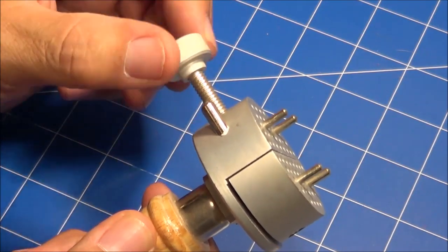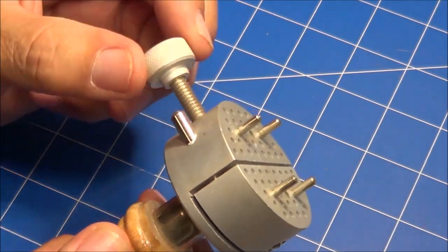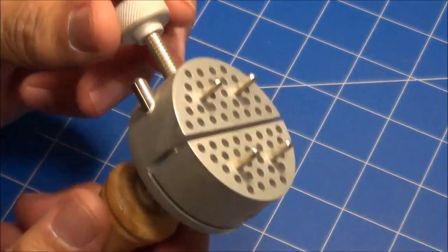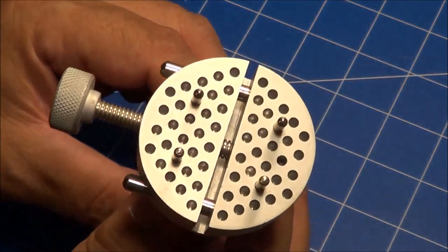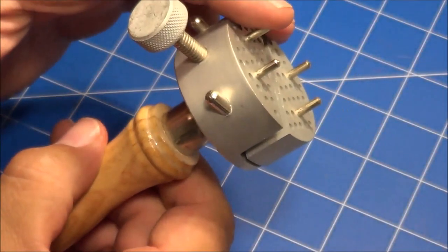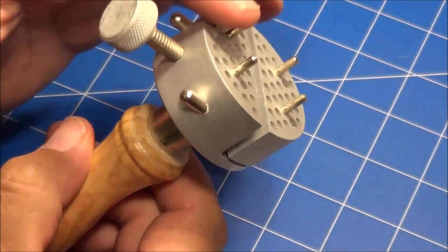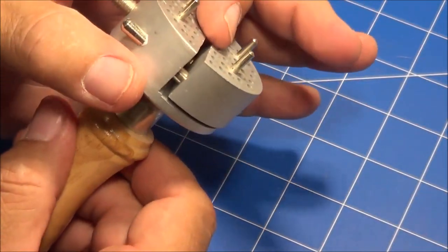You can find these readily available on eBay or even on MicroMark. It is a clamp-based style holder and you can see it has metal tabs here to hold things on, or you can clamp them in between.